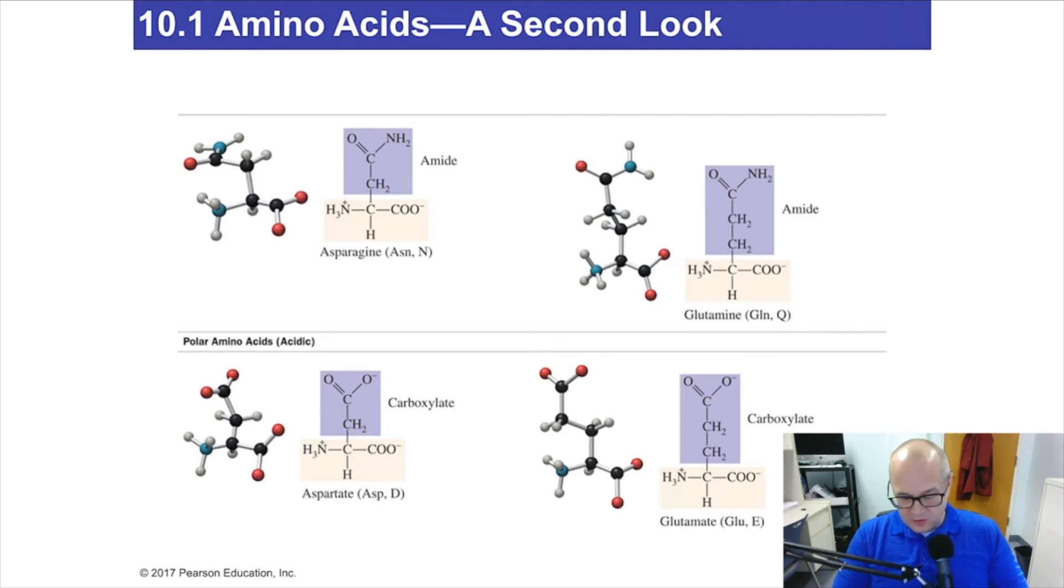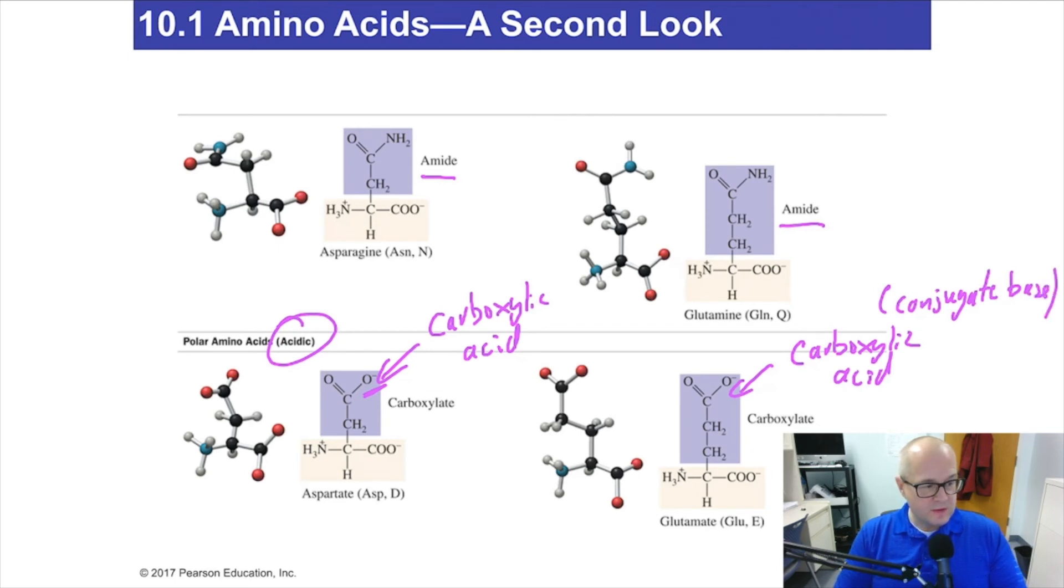Now, these are also polar. The amides are polar. Now here, these are polar, but you could also call them acidic, because right there is a carboxylic acid. Now, it's the conjugate base of an acid, but it's definitely acidic. Again, carboxylic acid. These are conjugate bases of acids, and they are most definitely acidic side chains.